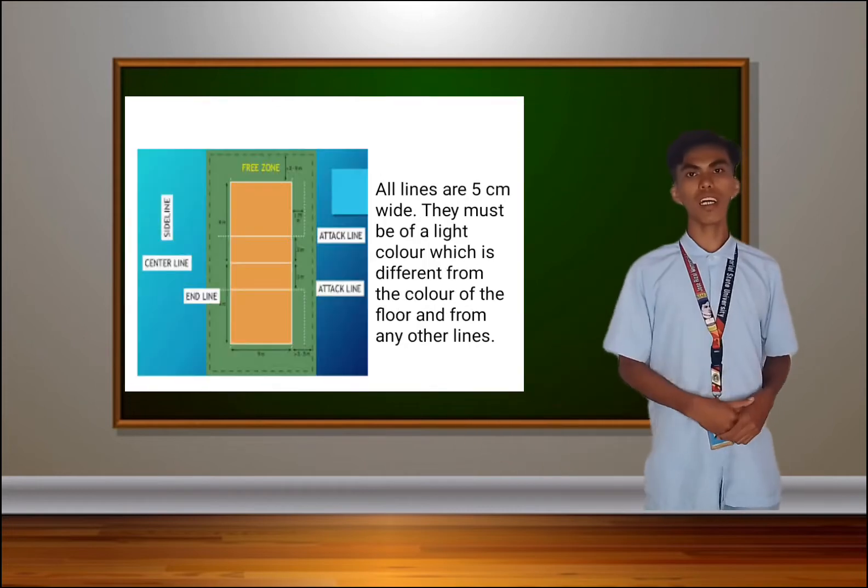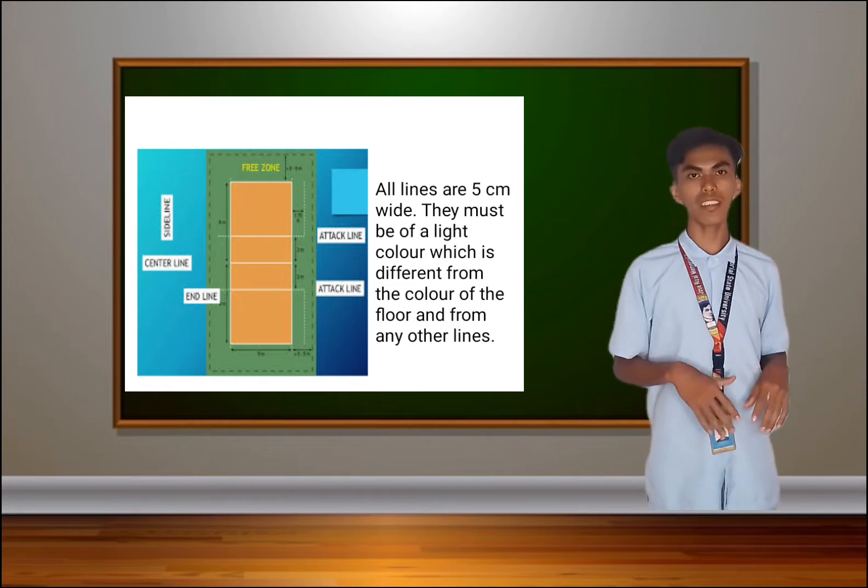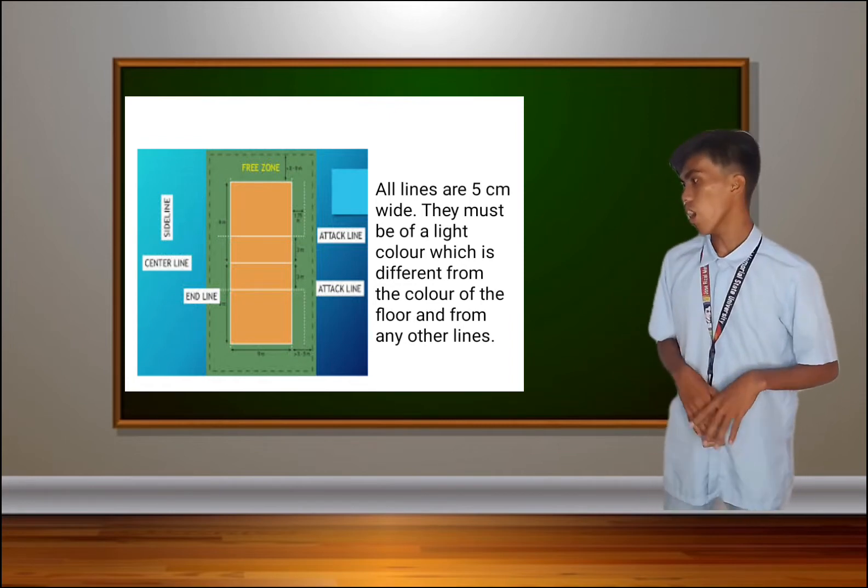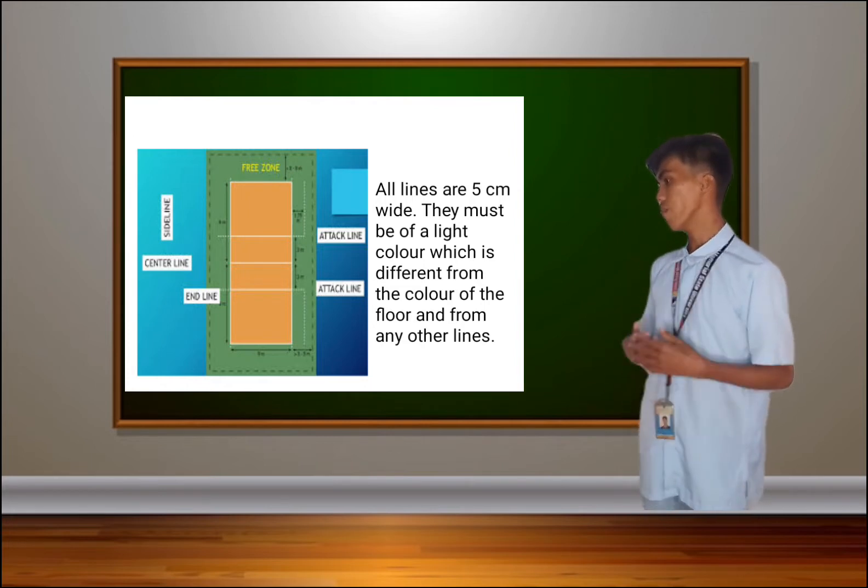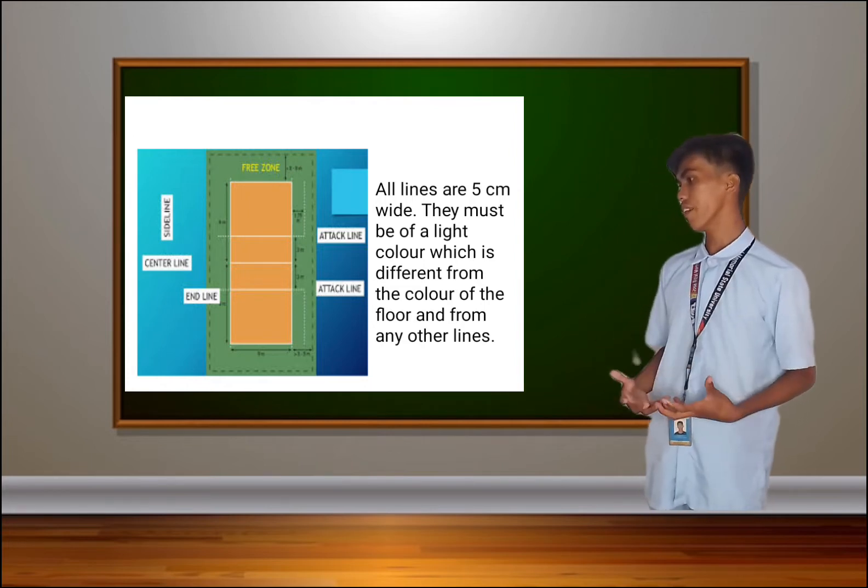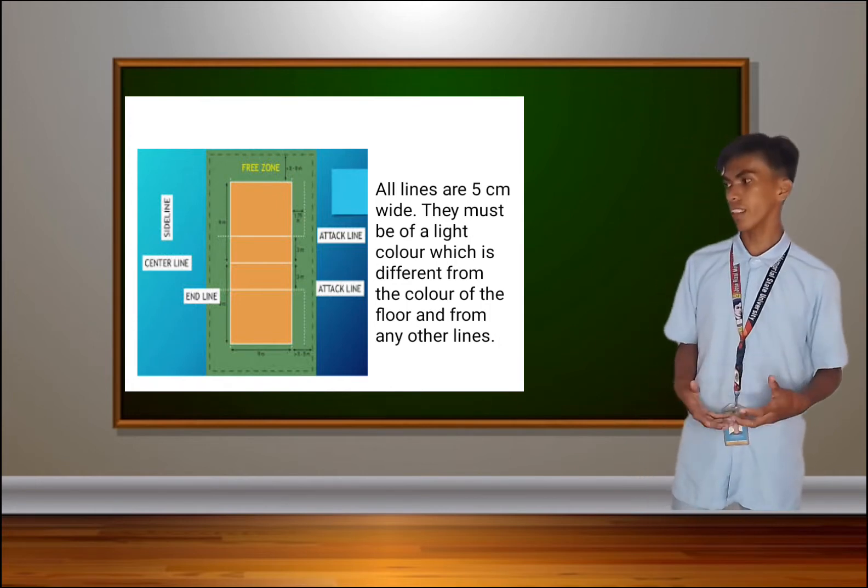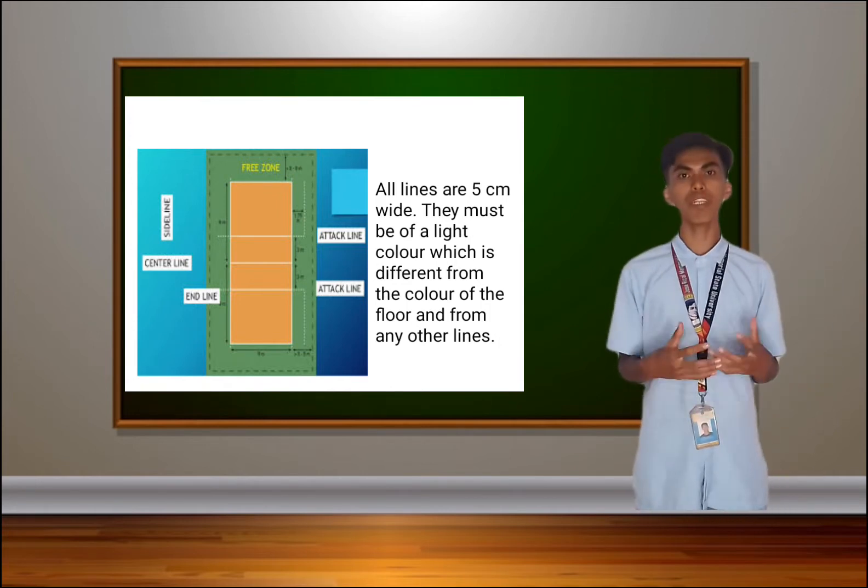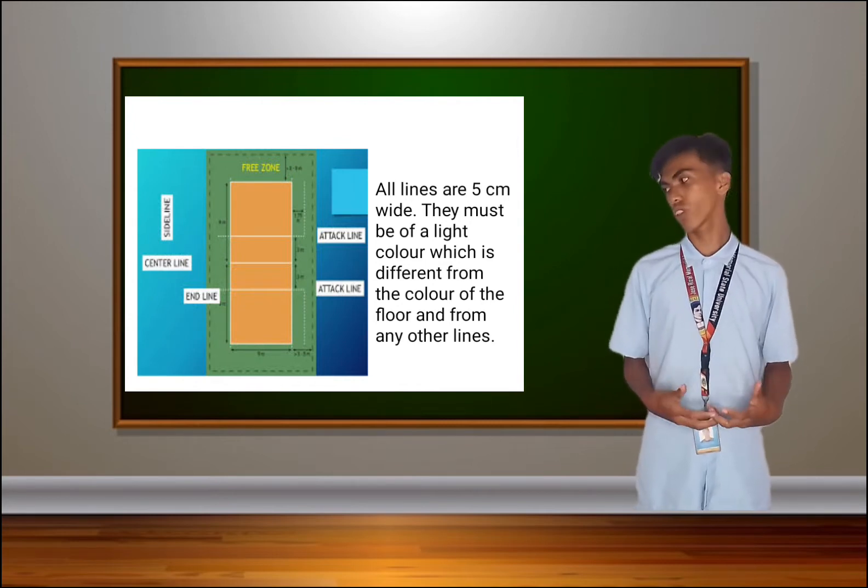Next, one of the compositions of playing area is the lines of the court. All lines are 5 centimeters wide. They must be of a light color, which is different from the color of the floor and from any other lines. The line of the court must be separated from any other color to avoid confusion.